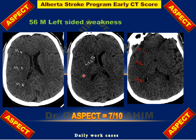Calculating the ASPECTS for the same patient: the caudate nucleus, internal capsule posterior limb, lentiform nucleus, and insula are free — no deduction there. M4, M5, and M6 are also free at the supraganglionic level. However, M1, M2, and M3 are involved. So the ASPECTS score here is 7 out of 10.